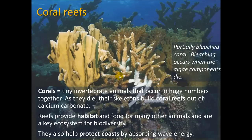Here we see partially bleached coral. Bleaching occurs when the algae components die — a really bad sign. We know that ocean temperatures are increasing, and at the same time the oceans are becoming more acidic from increased levels of carbon dioxide. Both of these are affecting our coral reefs.